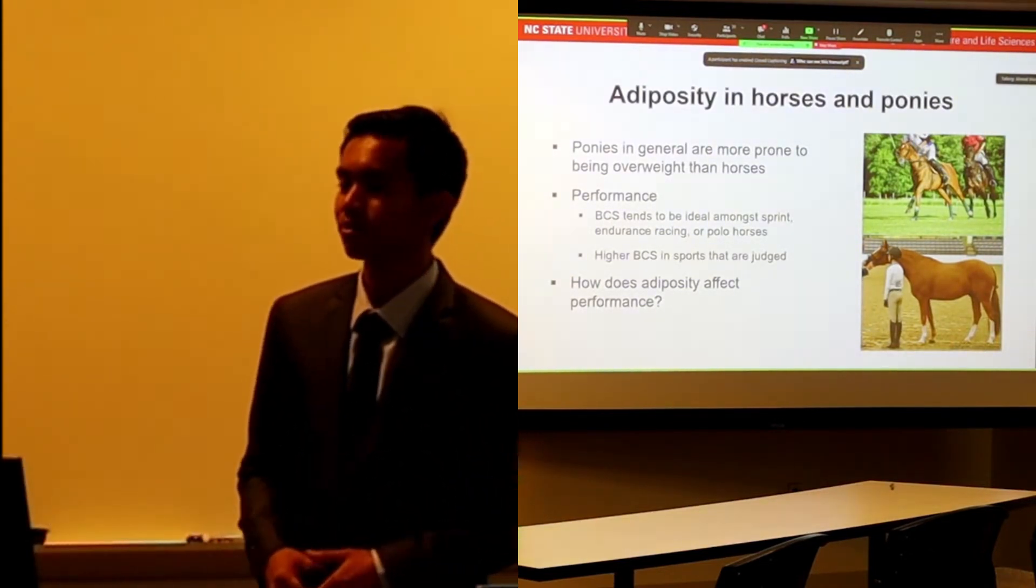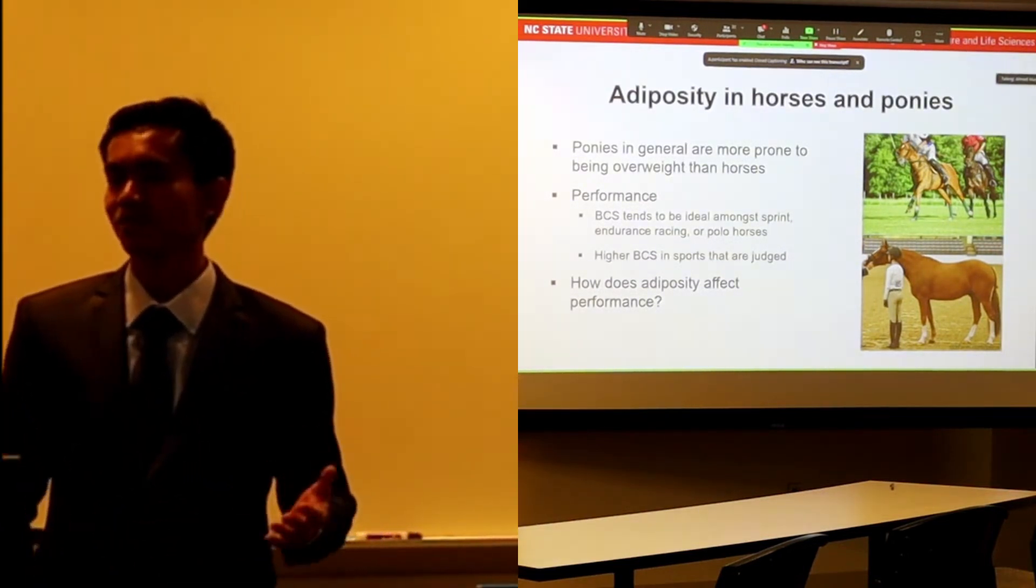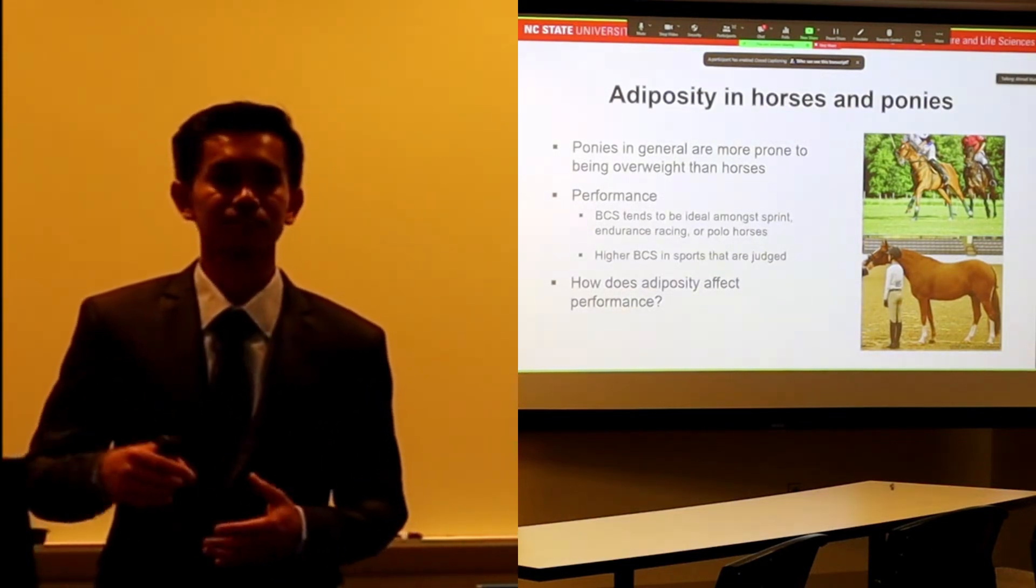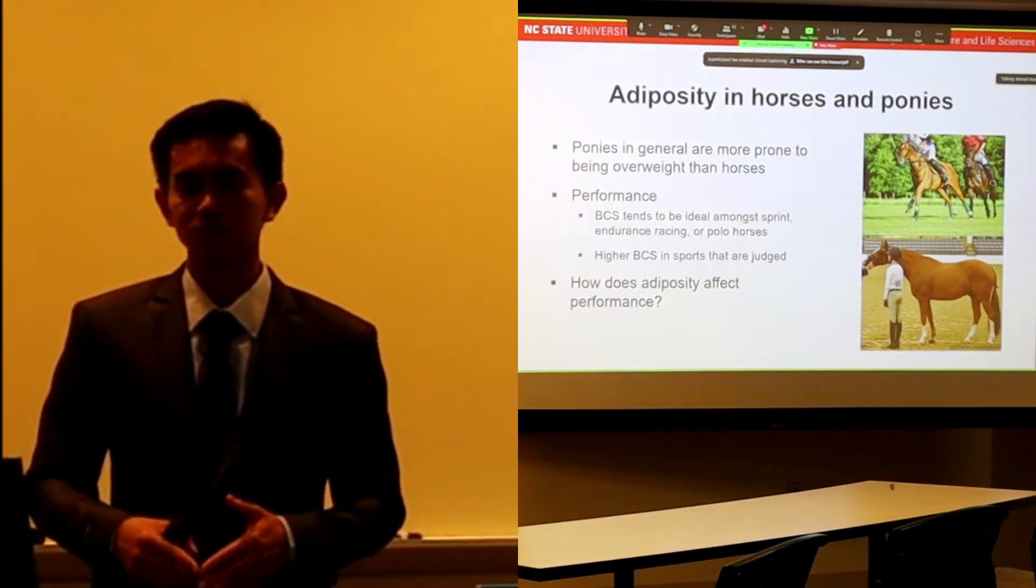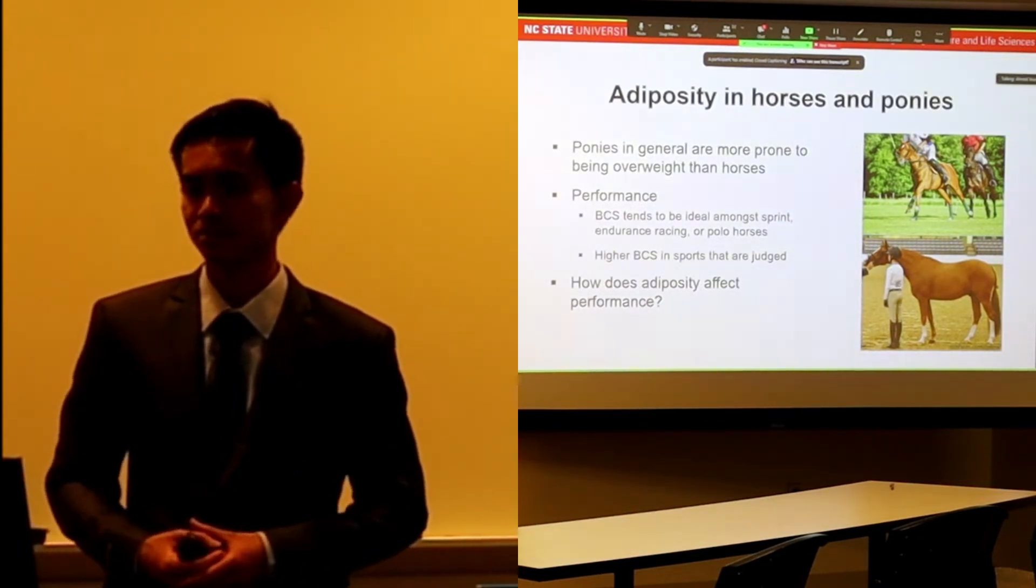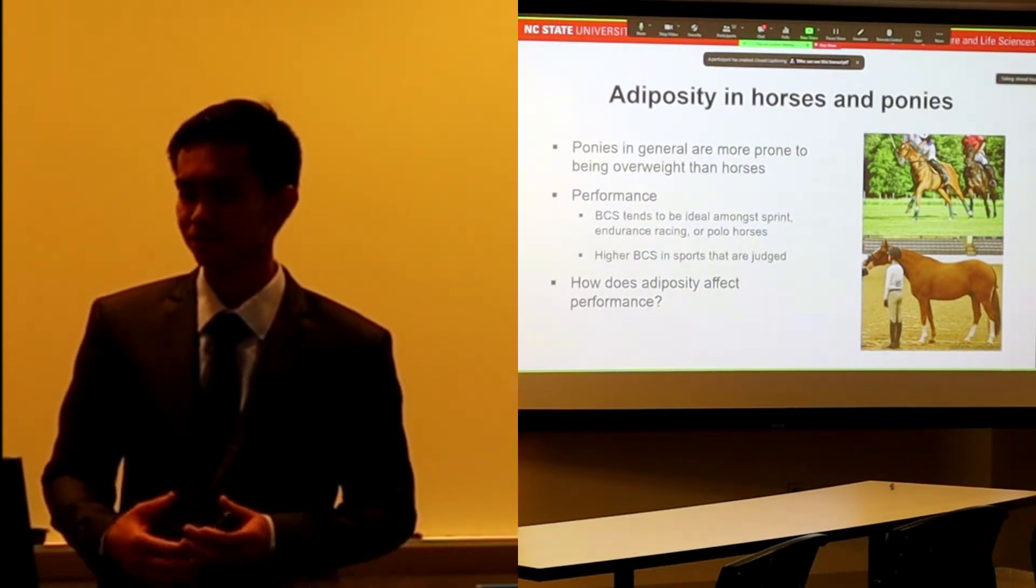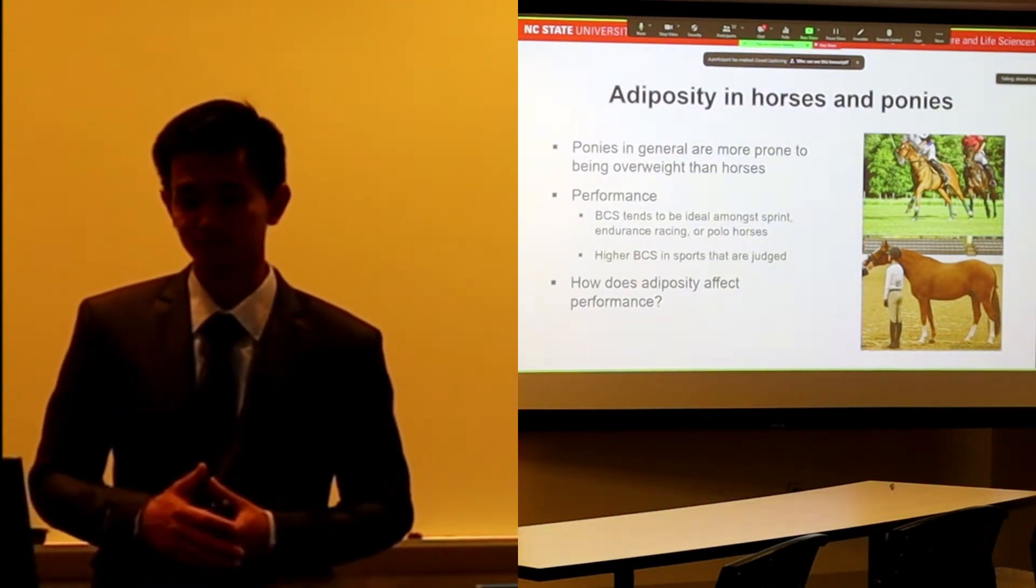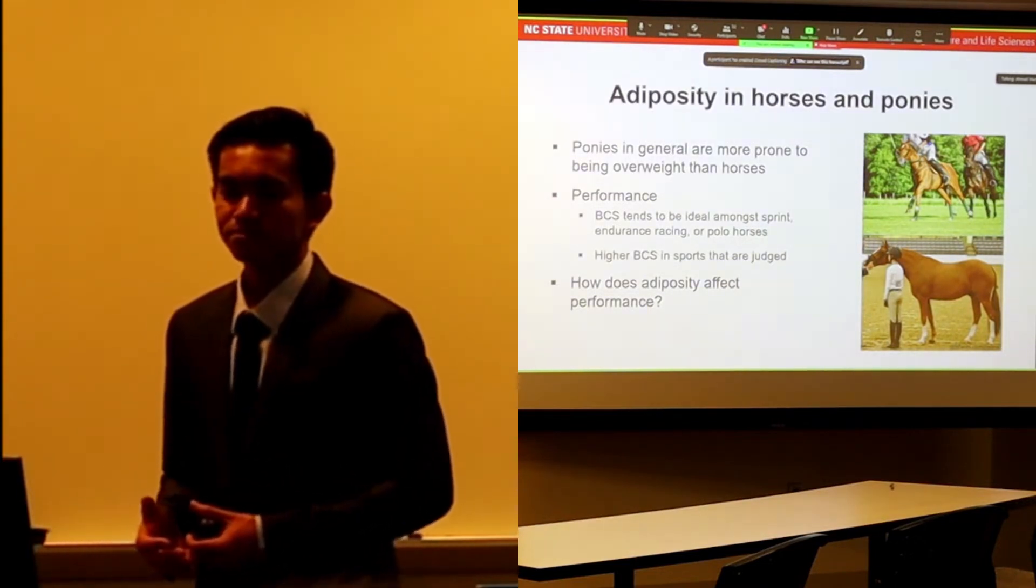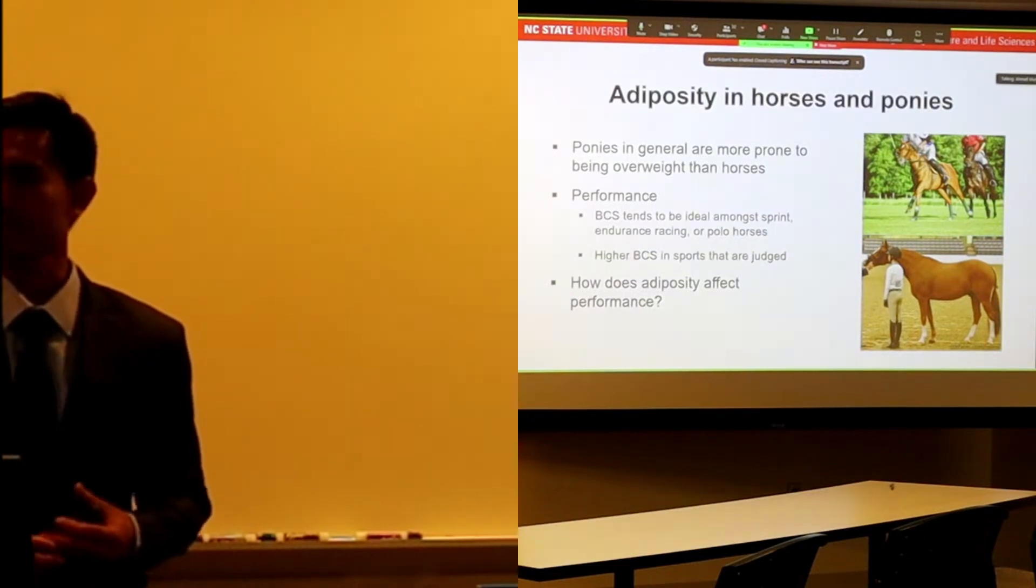Talking about adiposity in horses and ponies - basically, horses are larger equids with heights around 14 hands and 2 inches, around 145 cm, and ponies are smaller than that. In general, ponies are more prone to being overweight than horses.